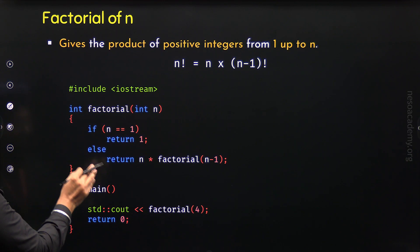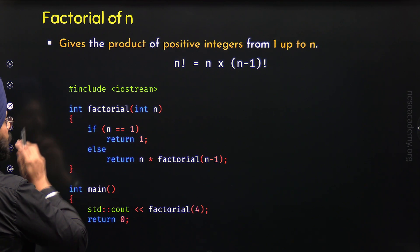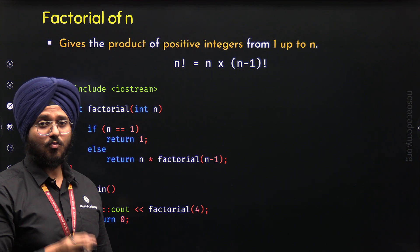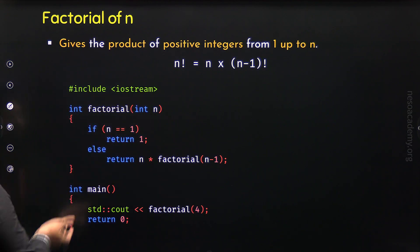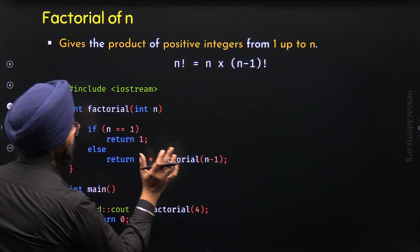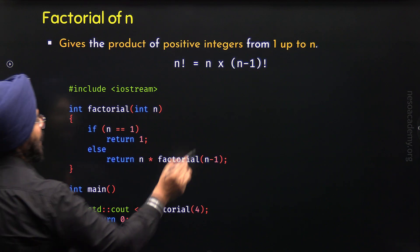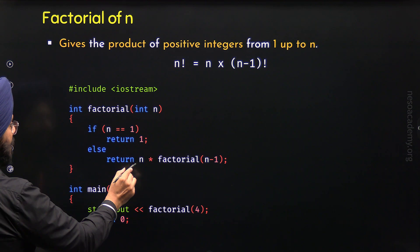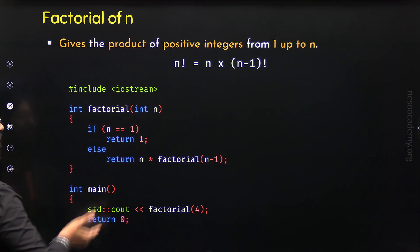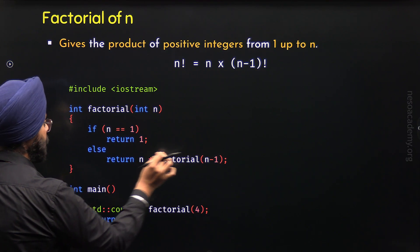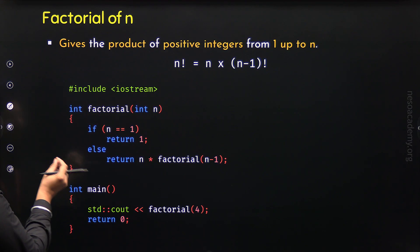The base case is chosen as 1 factorial because it is the smallest version of the problem and is easy to solve. The else block represents the recursive case, where we apply the formula: return N times factorial(N-1). This solves the big problem in terms of a smaller version of the same problem, and the result of N times factorial(N-1) is returned, which gives us N factorial.